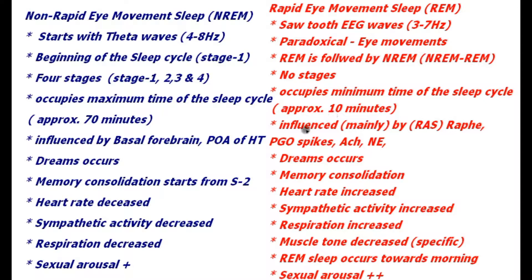Non-REM sleep is mainly influenced by the basal forebrain and the pre-optic area of the hypothalamus, whereas REM sleep is mainly influenced by the raphe nuclei of the reticular activating system, from where ponto-geniculo-occipital spikes and acetylcholine non-retinal neurotransmitters also play a role. Both centers are active in both cases, but each is most active in its respective stage — the basal forebrain centers in non-REM and the raphe nuclei centers in REM.